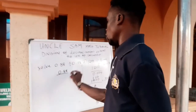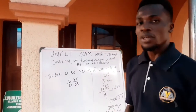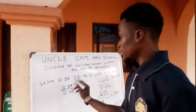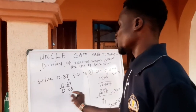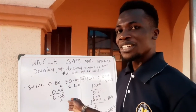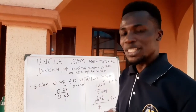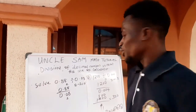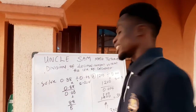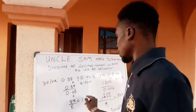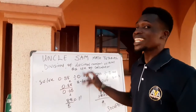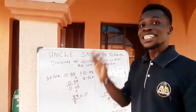As usual, 0.88 will be on top and 0.08 will be under. The first thing we do is count the number of decimal places. For the numerator it is 2, and for the denominator it is also 2. So we subtract: 2 minus 2 gives us 0. In this case there is no remaining decimal place, so we just divide. Remove the decimal point and you're left with 88 over 8, which gives 11. Because the remaining decimal places is 0, we're neither moving forward nor backward. So our final answer is 11.